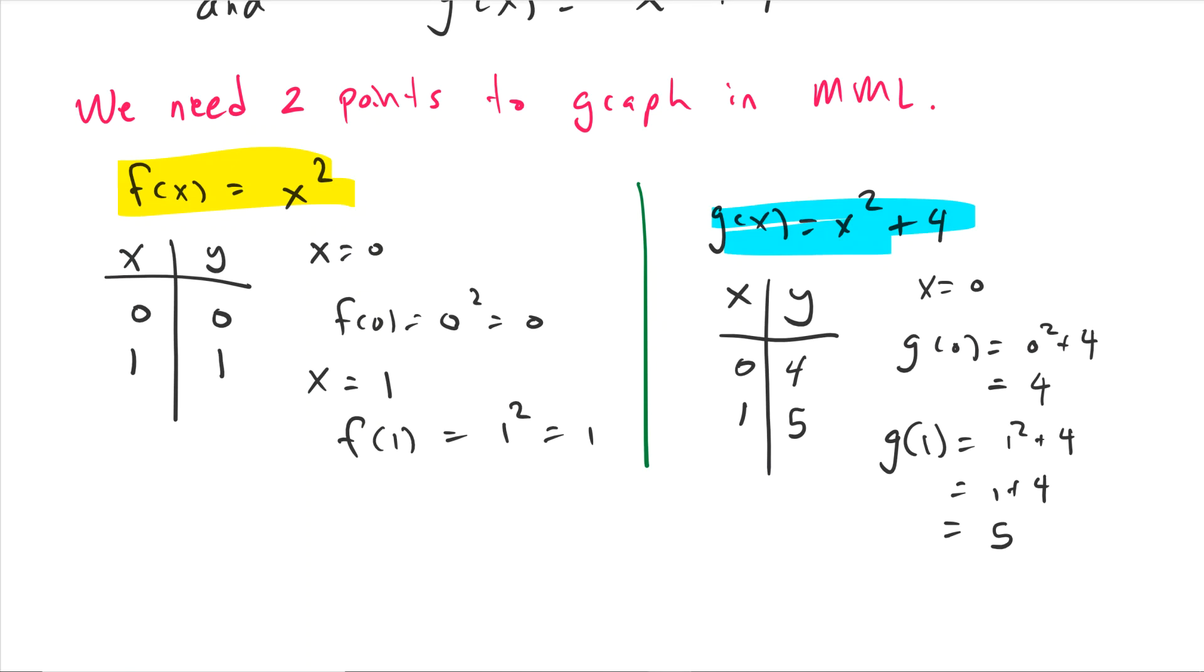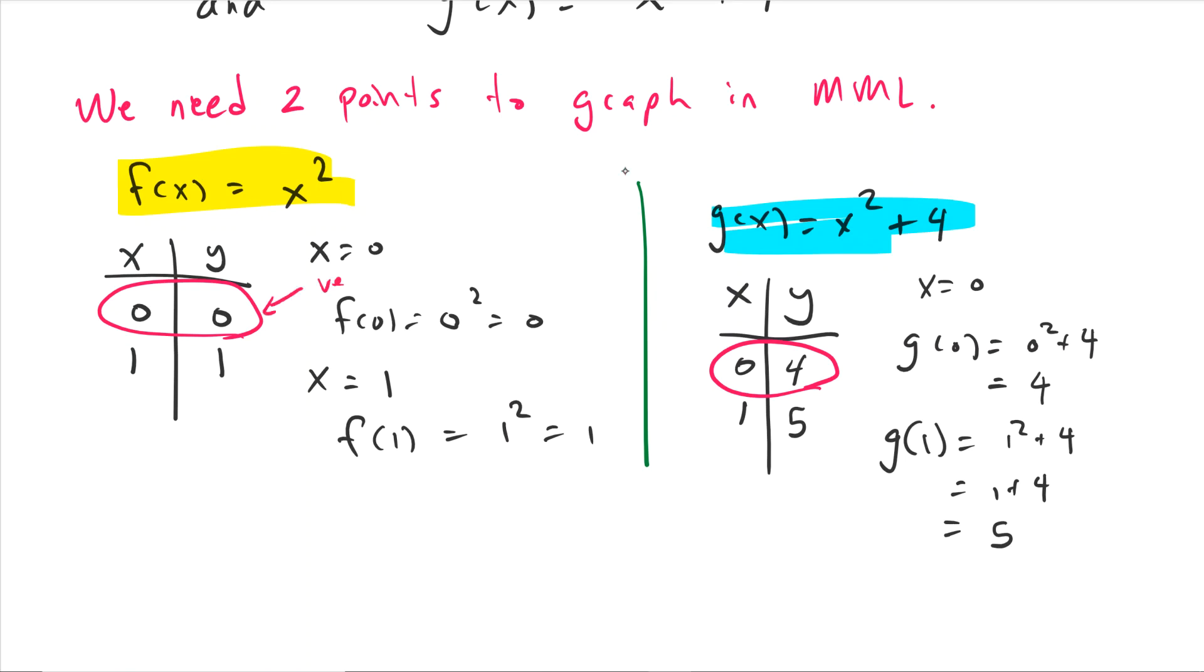We're going to choose two points. One of them needs to be the vertex. The vertex for x squared is at (0, 0), and the vertex for x squared plus four is at (0, 4).